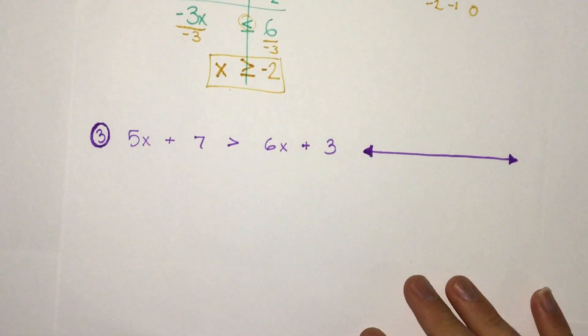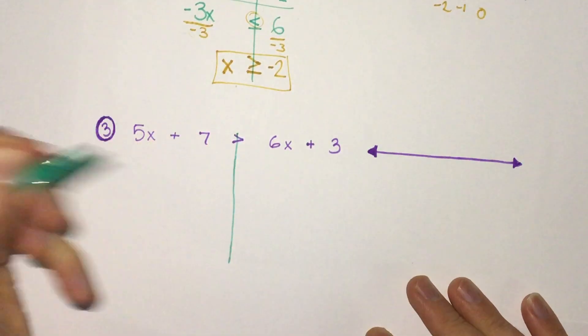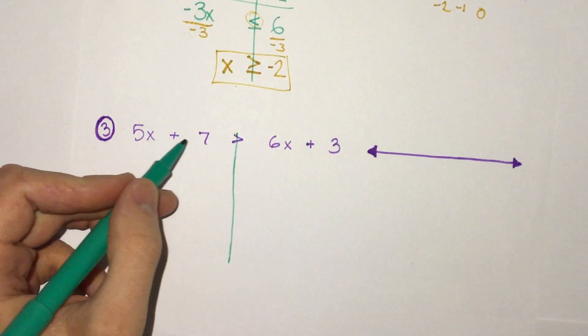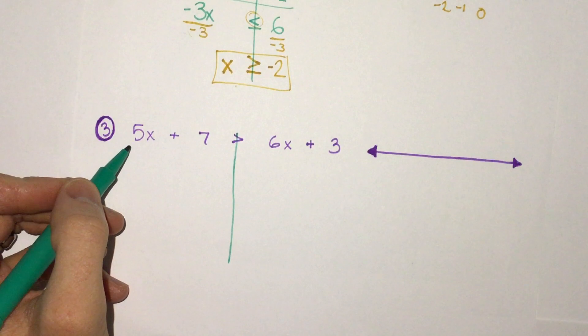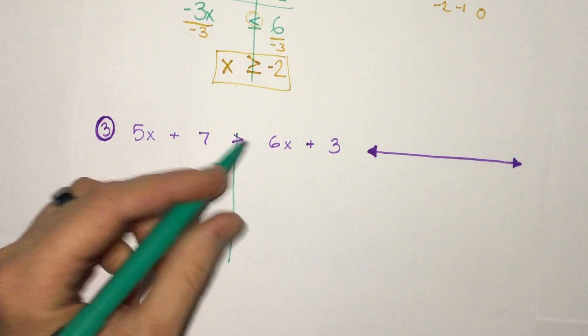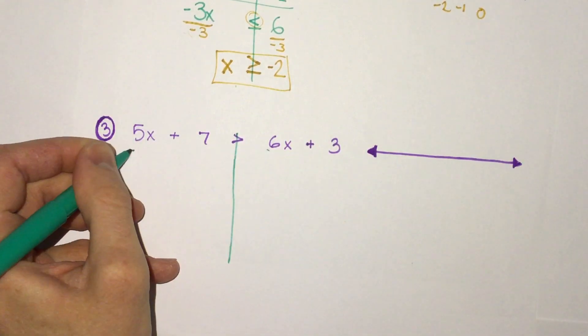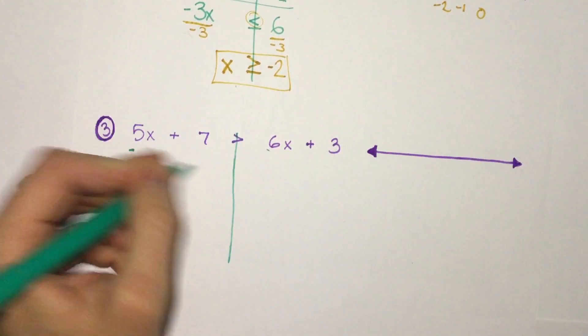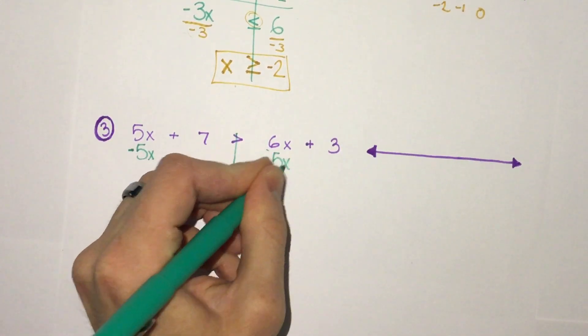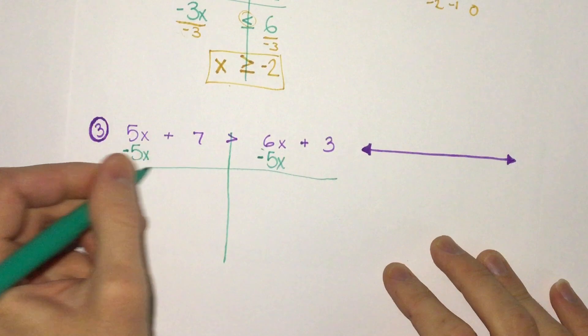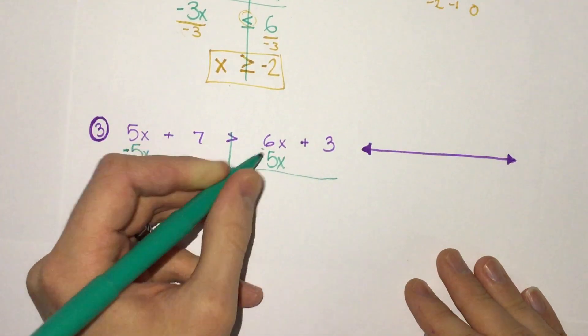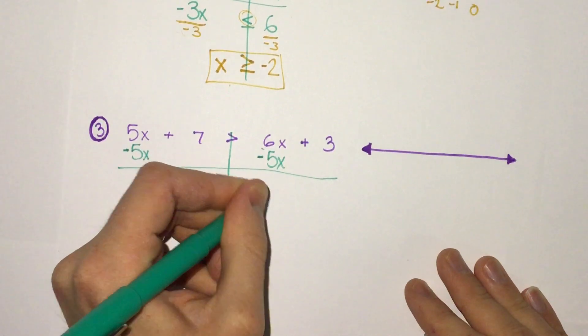We'll take a look at one last one where we have stuff on both sides. I like to take my x's and keep them positive, so 6x, we would want to move the 5x over to keep everything positive. We can subtract 5x. 5x minus 5x is 0, plus 7 is greater than 1x plus 3.